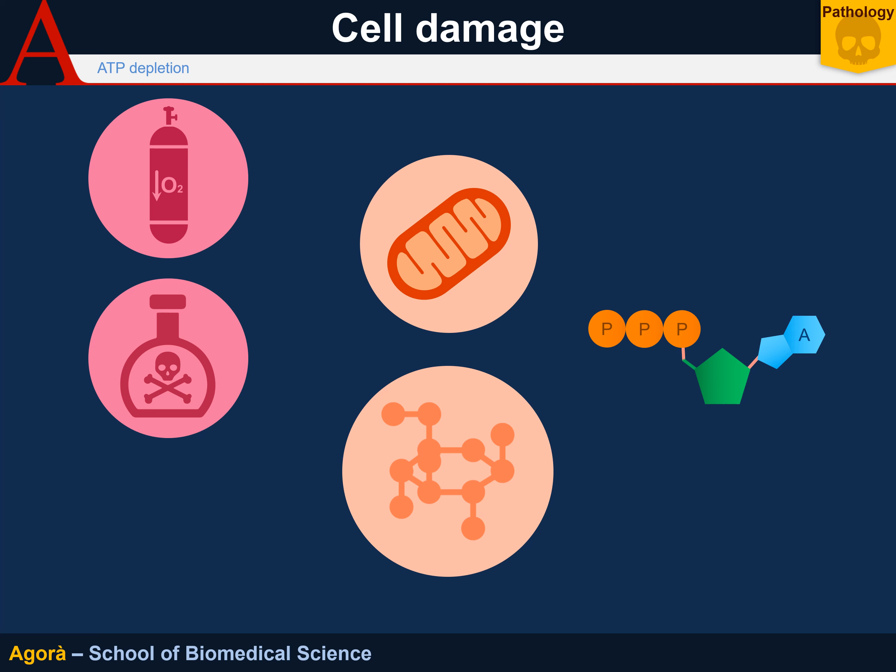During hypoxia, there is a lack of oxygen and therefore no terminal electron acceptor, so ATP cannot be produced in the mitochondria. During chemical toxic damage, there is a block in mitochondrial function only when toxicants interact directly with the respiratory complex, as in the case of cyanide.